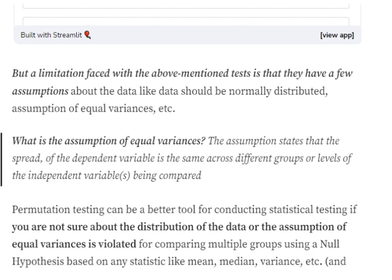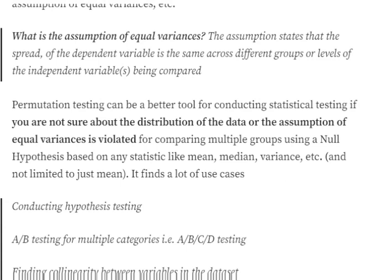Permutation testing is not restricted by any sort of assumption, so it can be a better tool when you don't know the distribution of the data set or when the assumption of equal variances is being violated — a very common issue in the real world, where assumptions are rarely followed. You can also use different statistics like mean, median, or variance, and are not restricted to just the mean.